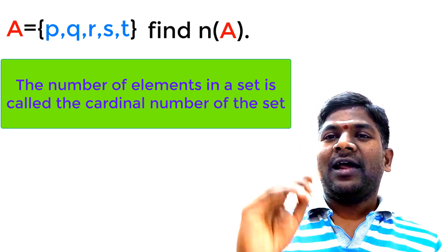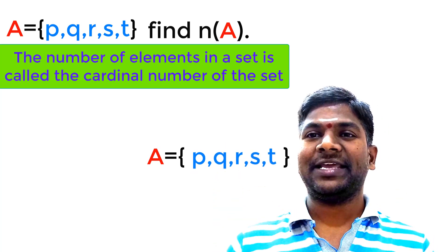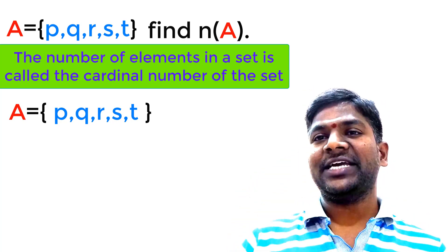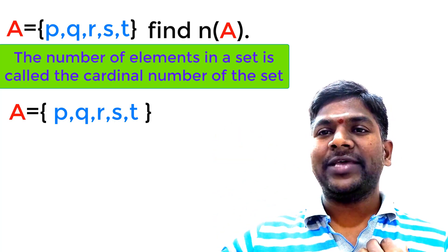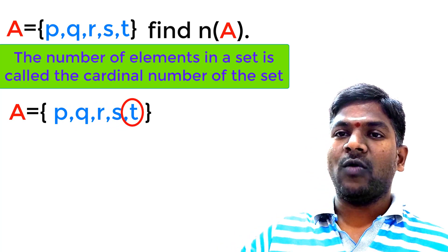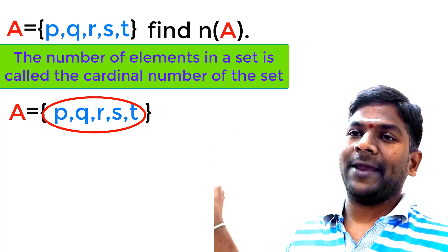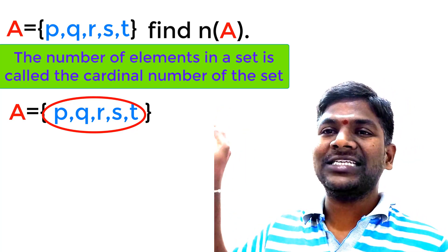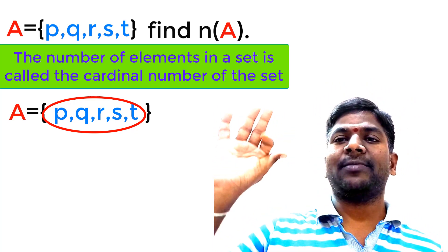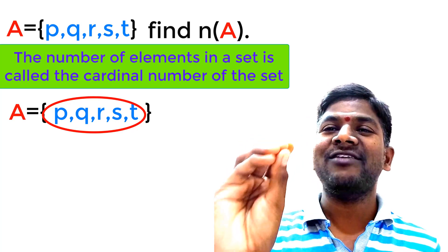A is equal to {P, Q, R, S, T}. These are the elements of set A. Now we would like to count the elements in set A: P, Q, R, S, T — that is 1, 2, 3, 4, 5. P is one element, Q is another element, R is another element, S is also an element, T is also an element. Importantly, set A consists of 5 elements.